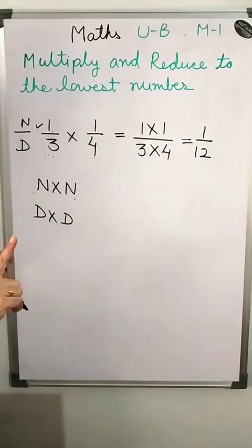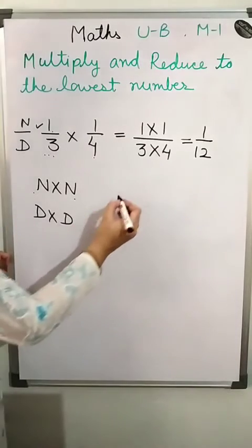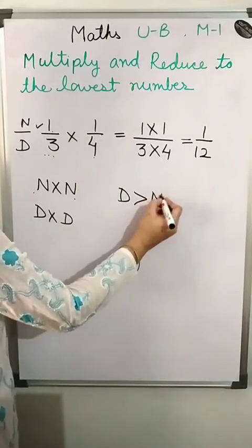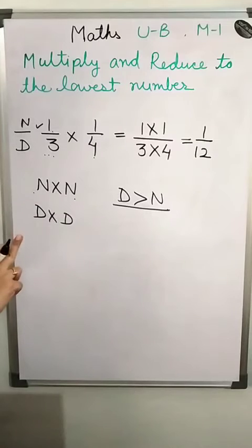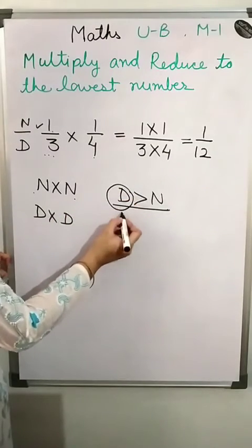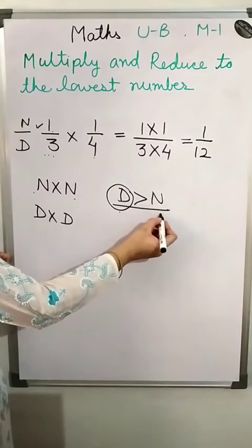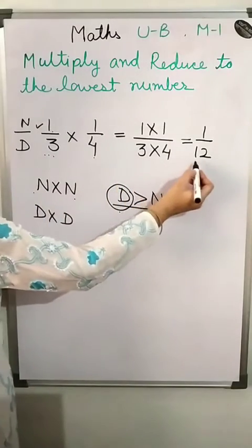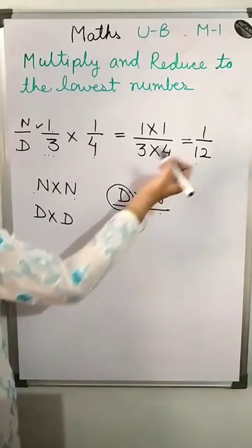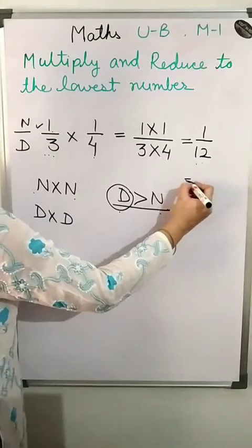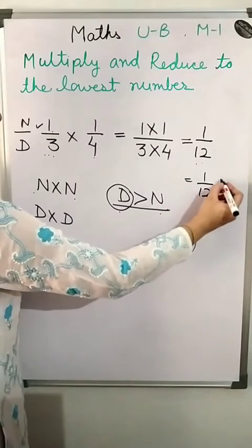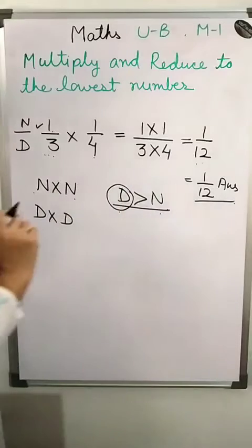What is a proper fraction? A proper fraction is when the denominator is greater than the numerator. Since 12 is more than 1, there is no need to convert it into a mixed fraction. So the answer is 1 upon 12.